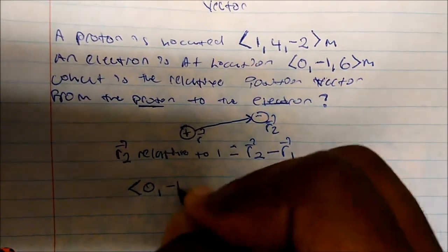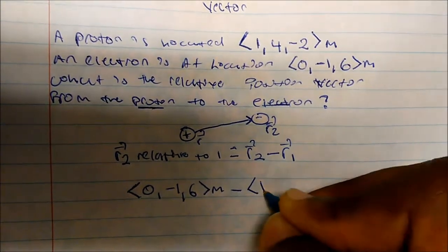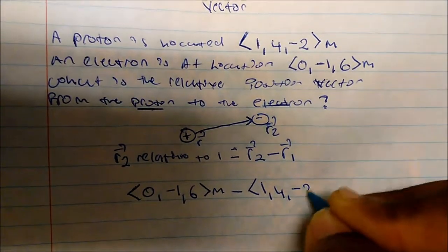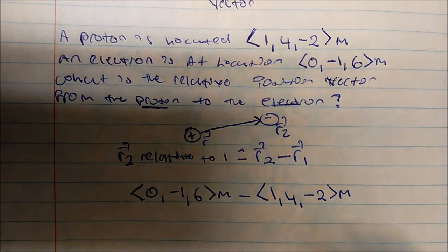So we take 0, negative 1, 6 meters, and we'll minus that from 1, 4, negative 2 meters. And this simply becomes vector subtraction.